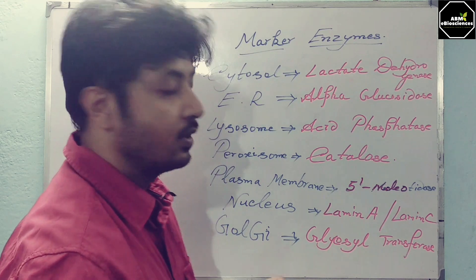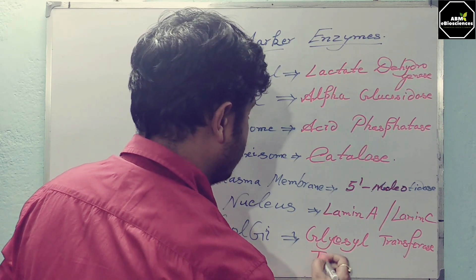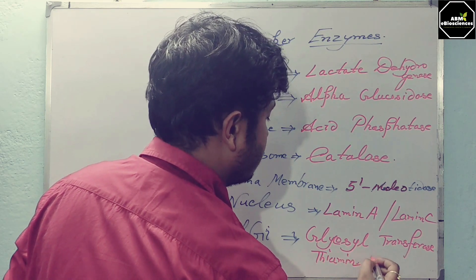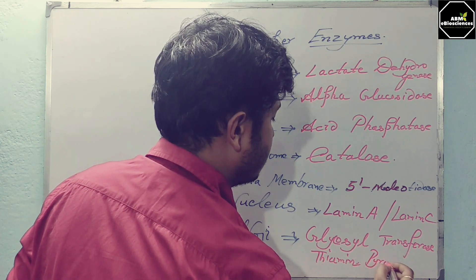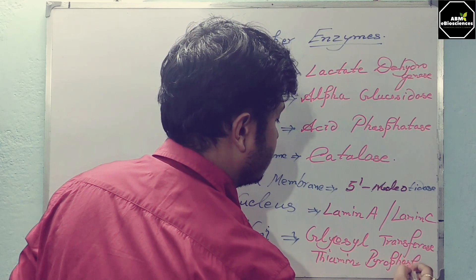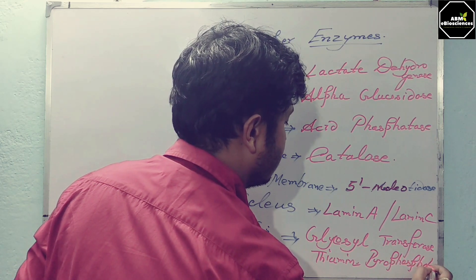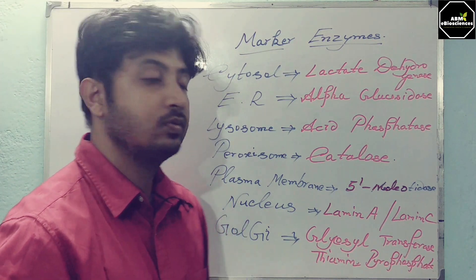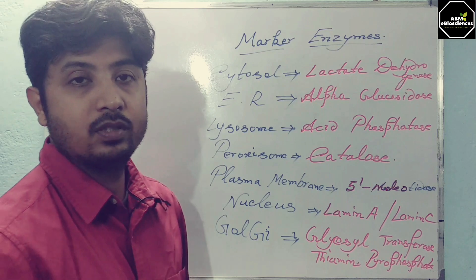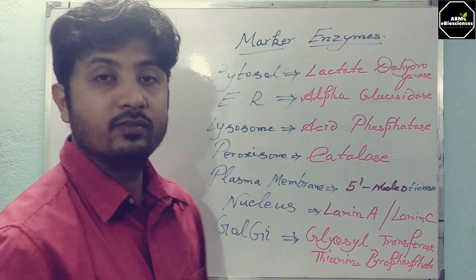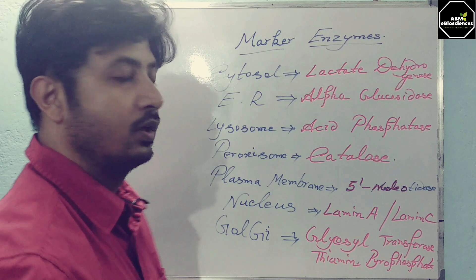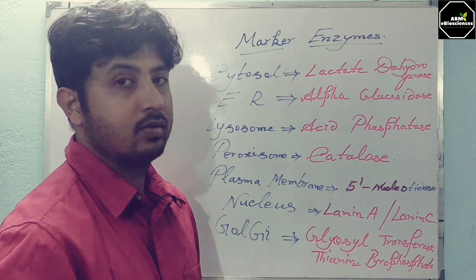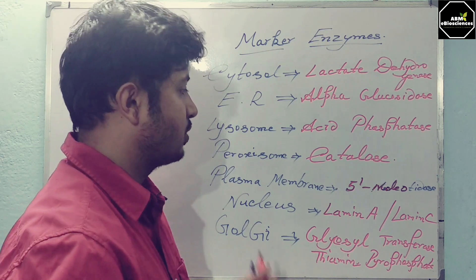For the Golgi apparatus, the marker enzymes are glycosyl transferase, or sometimes thiamine pyrophosphate is also used. So you have two enzymes to confirm the Golgi apparatus: glycosyl transferase and thiamine pyrophosphate.